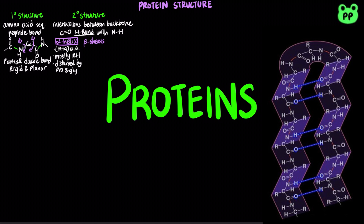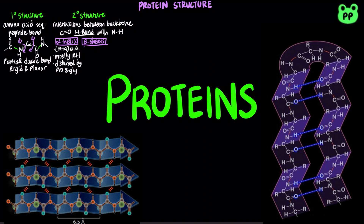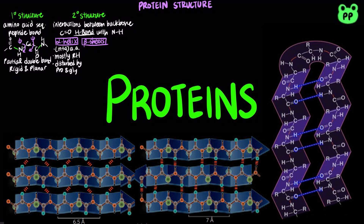In beta sheets, the backbone of the polypeptide chain is extended in a zigzag rather than helical structure, arranged in several segments side by side. The adjacent polypeptide chains in the beta sheet can be either parallel, having the same amino-to-carboxyl orientations, or anti-parallel, having opposite amino-to-carboxyl orientations. The anti-parallel beta sheet is more stable because the interstrand hydrogen bonds are essentially in line. Beta sheets favor bulky amino acids, such as branching amino acids and aromatic amino acids.